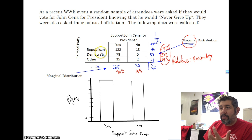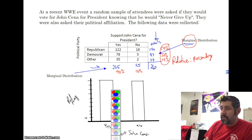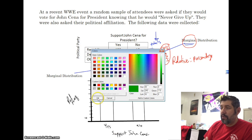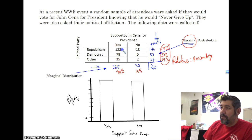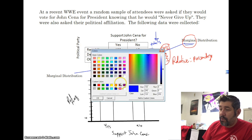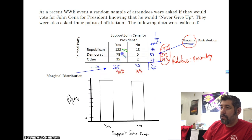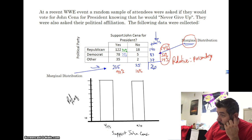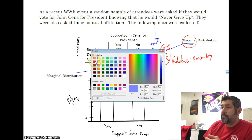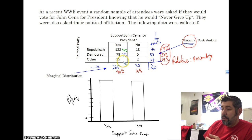Inside each bar I'll show the percentage that were Republican, Democrat, and Other. For the yes votes: 122 divided by 235 gives 52% Republican; 78 divided by 235 gives 33% Democrat; and 35 divided by 235 gives 15% Other.